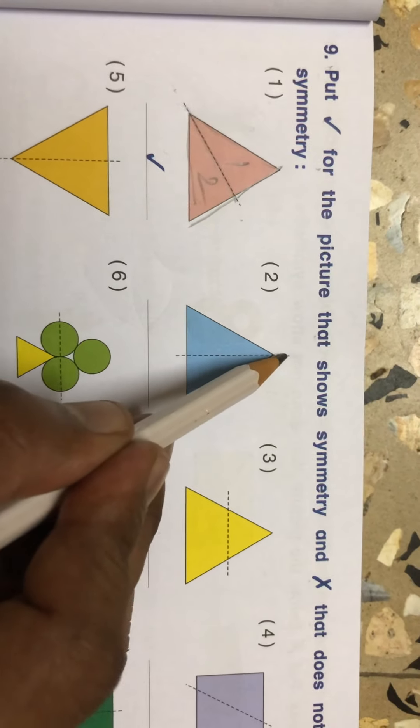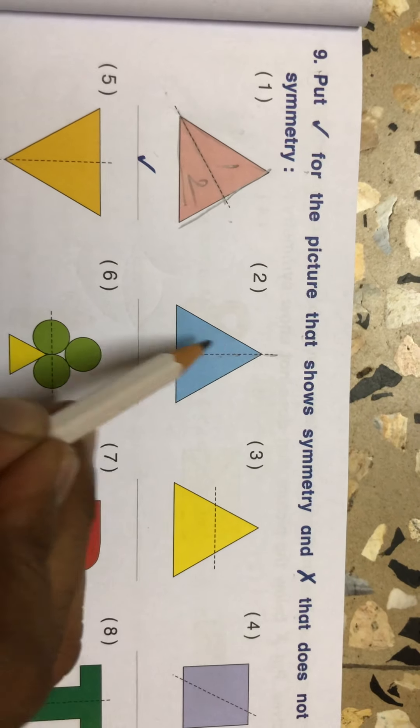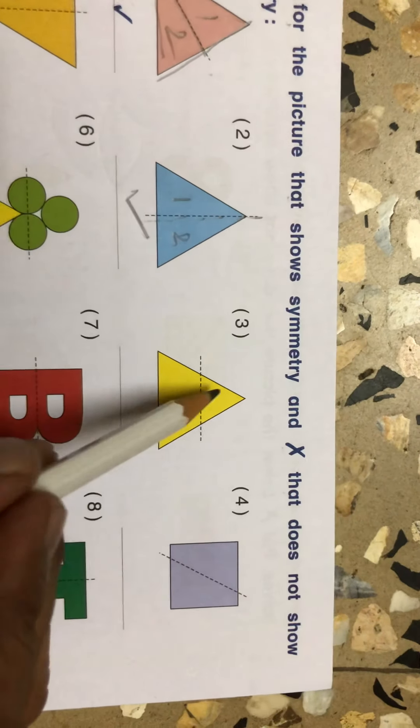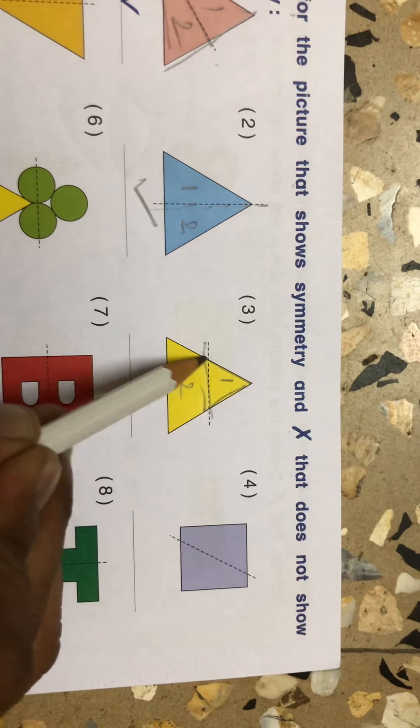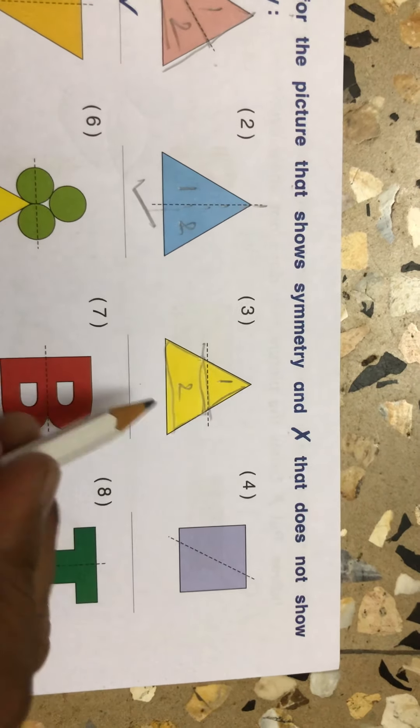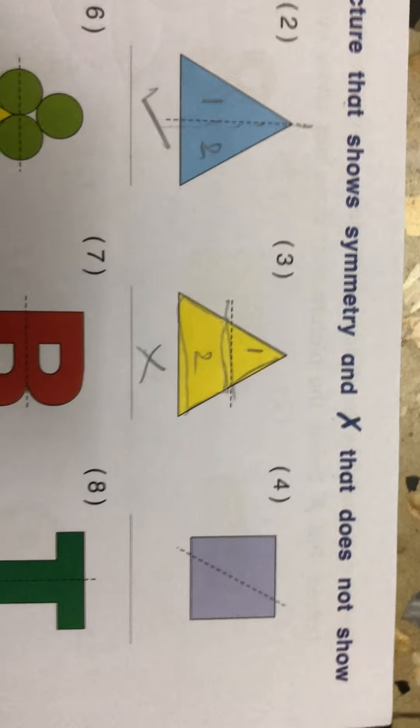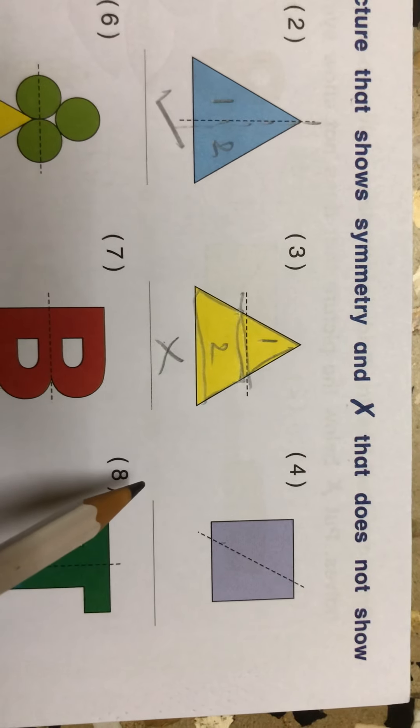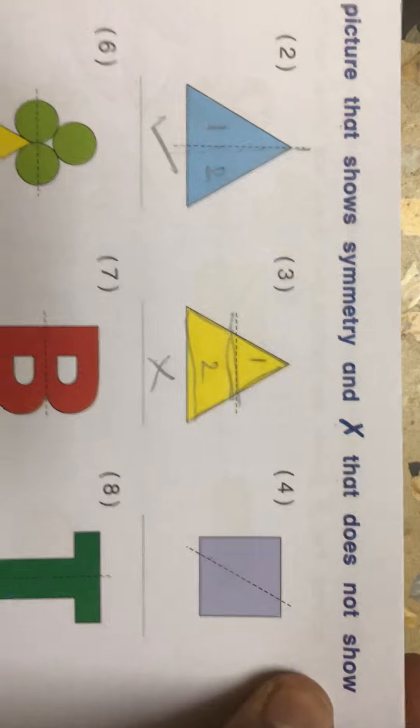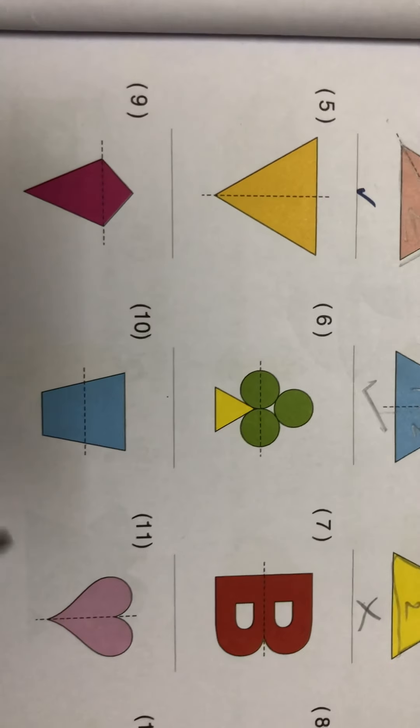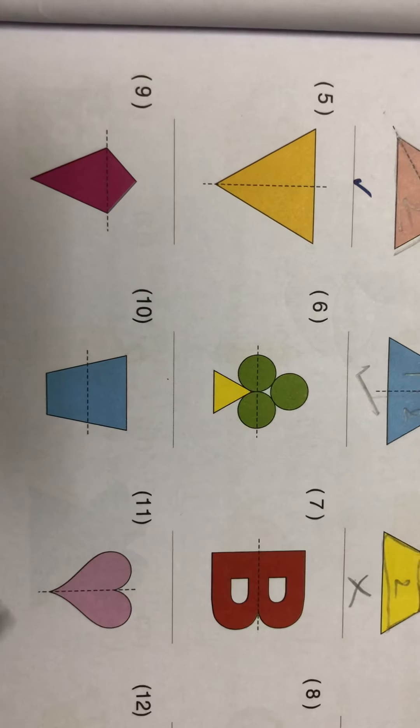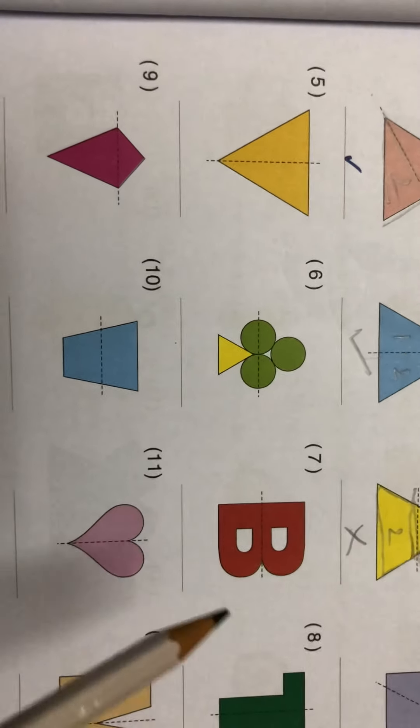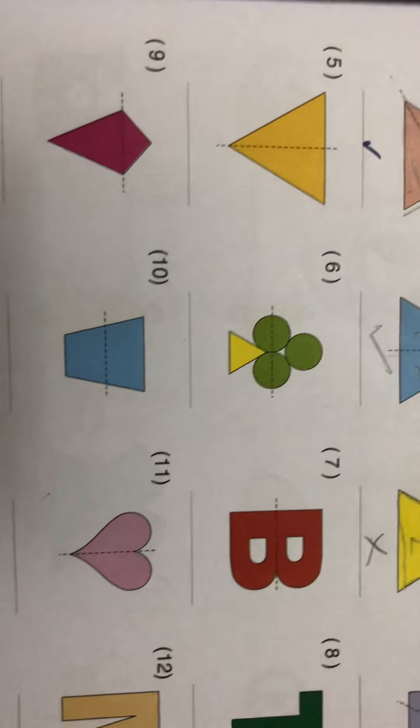See the next. Same here, it has divided in two equal parts, one and two. It is also symmetry, so it is a tick. Now see this one. It is divided into two parts, but see, is it same? No. So you have to cross. Now see the next, fourth number. Now that you will do yourself. The shapes which are symmetrical, you have to tick mark. And those which are not symmetrical, you have to cross it.